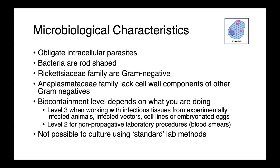The organisms we're going to talk about today are obligate intracellular parasites. These bacteria are rod-shaped, and the Rickettsiaceae family are gram-negative. The Anaplasmataceae family, another group within the Rickettsiales, lack cell wall components typical of other gram-negative bacteria. The biocontainment level of these organisms depends not only on what species you're working with, but what you're actually doing with them.